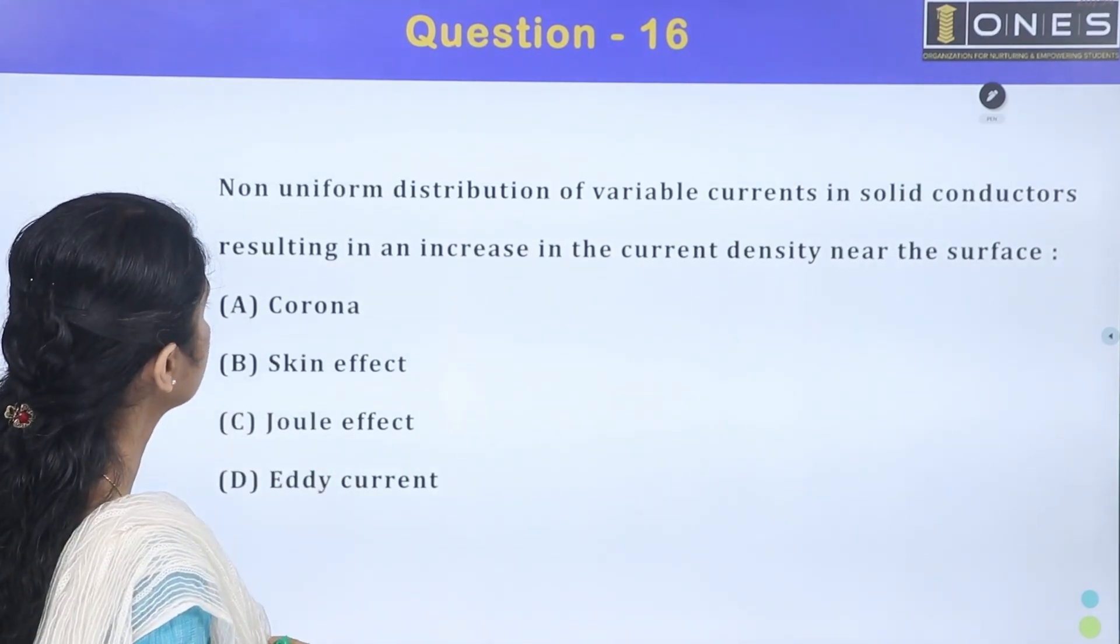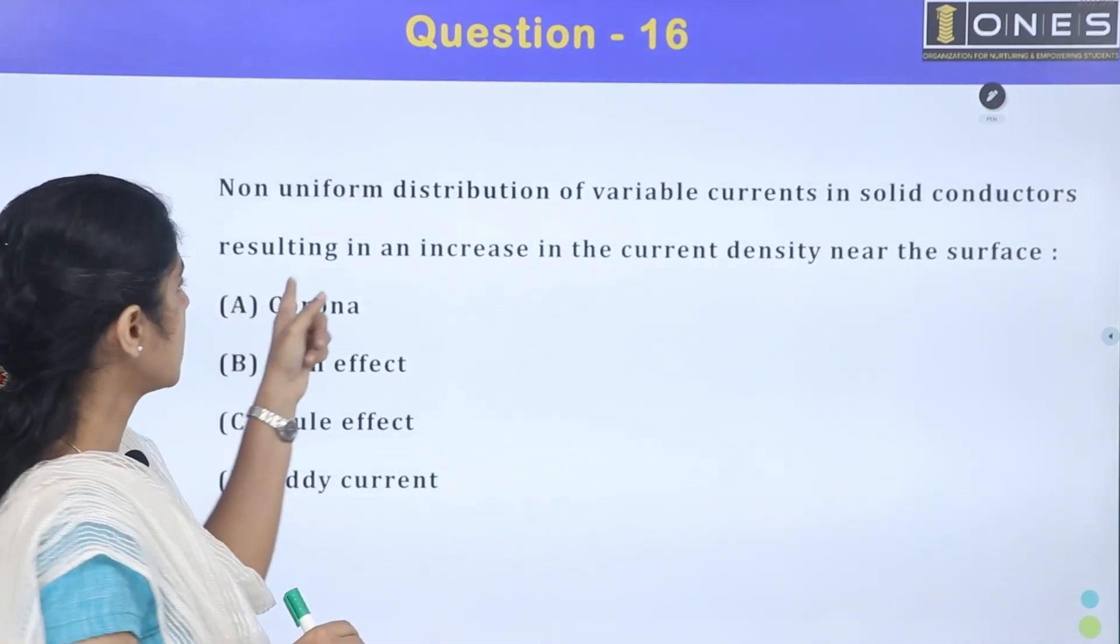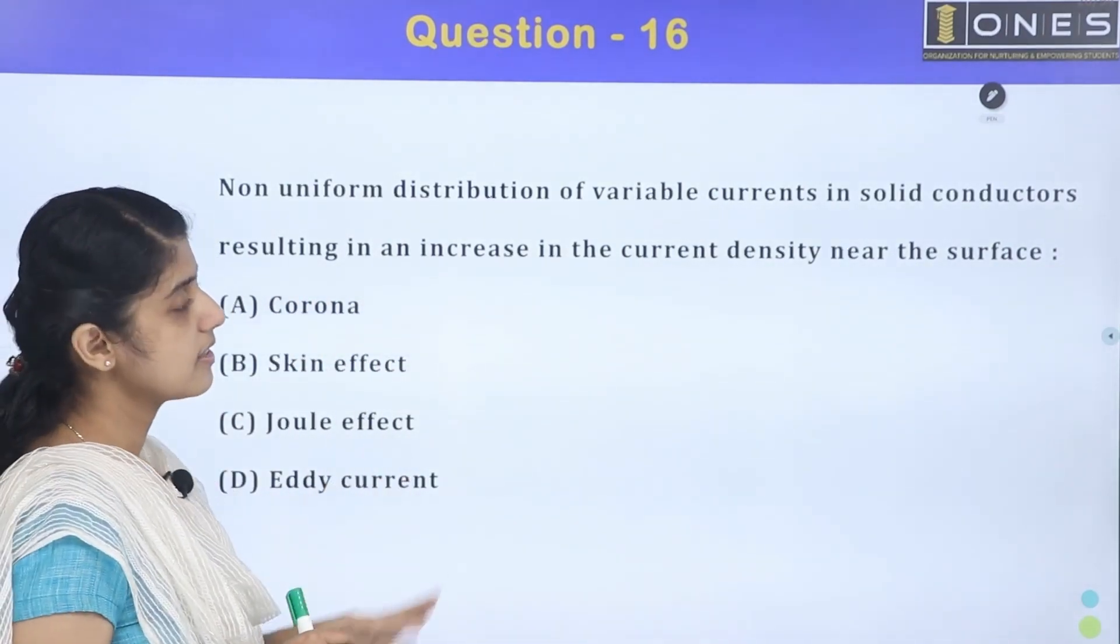Question number 16. Non-uniform distribution of variable currents in solid conductors resulting in an increase in the current density near the surface.